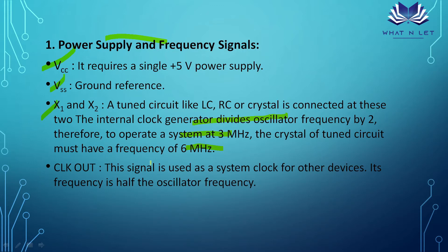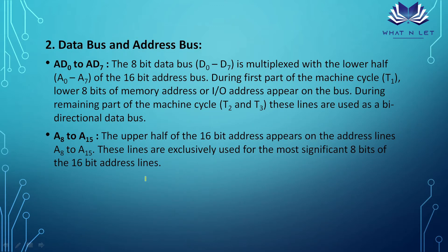Clock Out is another signal. Its frequency is half of the oscillator frequency, and it is used as a system clock for other devices.